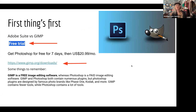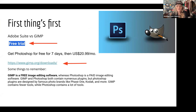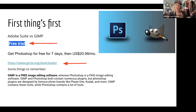So last week we talked about Adobe Suite versus GIMP. These are clickable downloads which you can click right here off the slideshow. You can get a free trial of GIMP — it will always be free — or you can get Photoshop for seven days, then it's a monthly fee for $20.99.